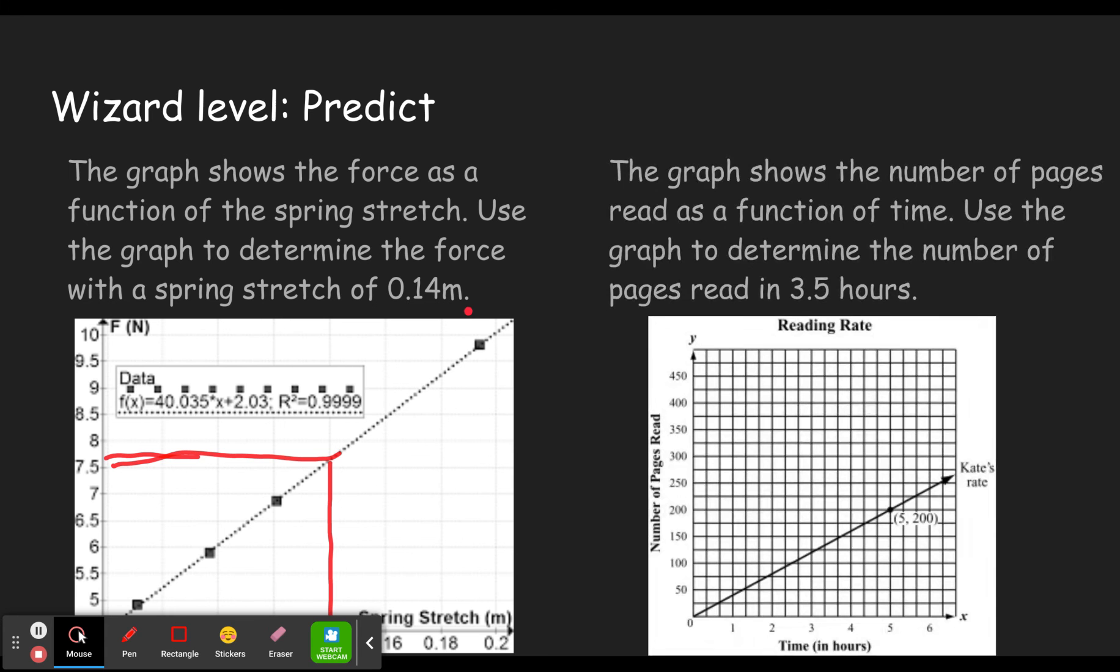The graph shows the number of pages read as a function of time. So we've got pages read and we've got time. Use the graph to determine the number of pages read in 3.5 hours. So we go to 3.5 hours, which would be right in here. Okay? We follow that up to the line. We follow the line across. Try not to be as wiggly as I am on this. And somewhere between 125 and 150, maybe 135, 140. Either of those would probably give you the correct answer. Okay? So just follow that across and you'll get the answer. It's just the ability to read the graph here, which is also a function of the slope.